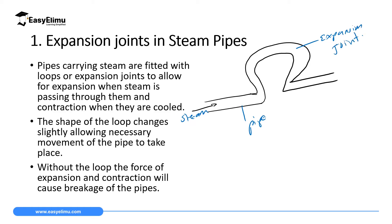This joint allows room or space for expansion when steam is passing. Remember, steam is water in gaseous state, which means it is water at very high temperature. So when water at very high temperature passes through this pipe, it will make the pipe, which is in solid state, to expand. When the pipe expands, this loop will allow the pipe to move outwards, hence avoiding breakage.